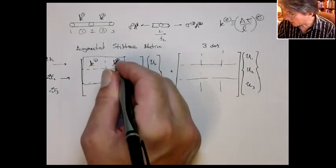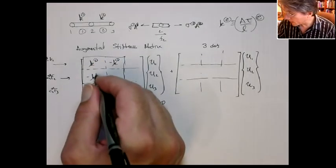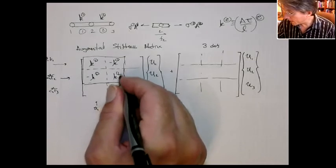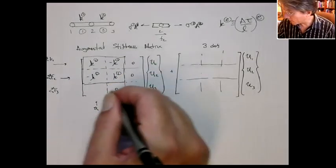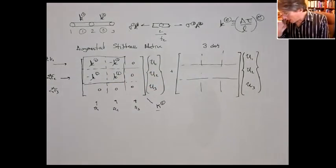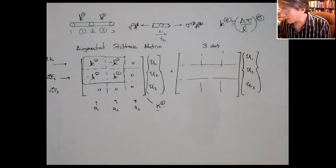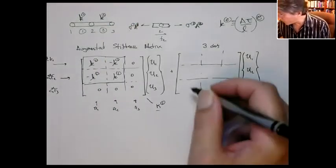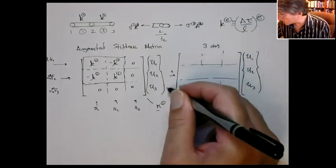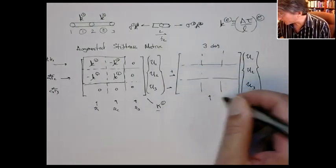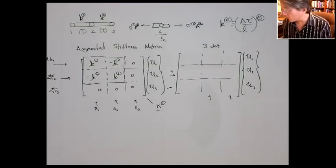k1 there, and you'd have 0 everywhere else. The second element relates the forces at nodes 2 and 3 to the displacements at node 2 and 3.